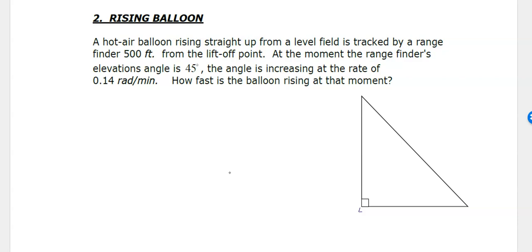The first thing to do is to draw a picture, and this gets better with practice. The person doing the tracking is over here, the liftoff point is there. That's your 500 feet, which does not change. The range finder stays stationary and the balloon is going straight up. You could call that x, but it's going to be a constant. Typically we call vertical stuff y. Here's your balloon. The balloon is going up, so dy/dt is going to be positive. The dx/dt is 0. As the balloon goes up, this angle here changes.